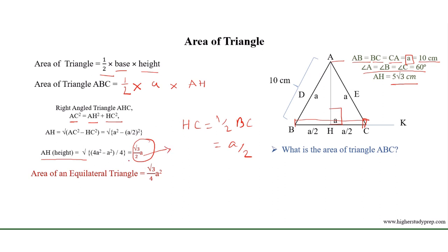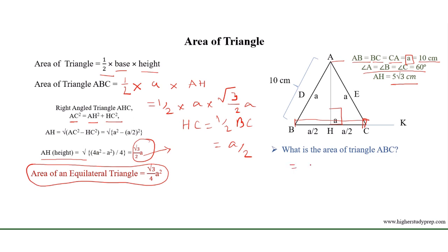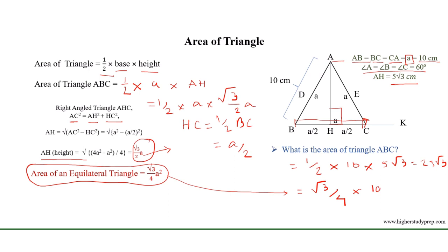So the area of an equilateral triangle equals one half multiplied by base multiplied by height. Applying the values: one half multiplied by 10 multiplied by 5 root 3 equals 25 root 3. Using the formula root 3 over 4 multiplied by 10 squared also gives 25 root 3 cm squared.